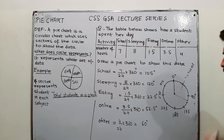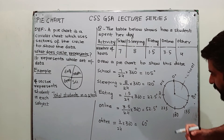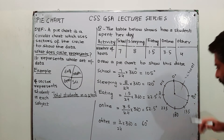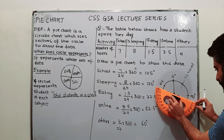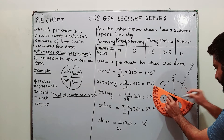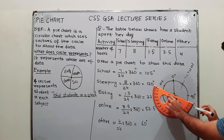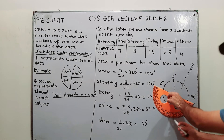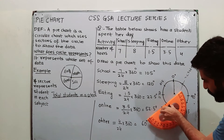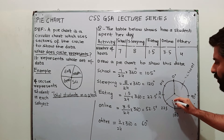The next sector is for sleeping, which has an angle of 120 degrees. Start from where you ended the school sector. Place your protractor on this line — this is 0 — and measure up to 120 degrees. Join this point to the center. This is the second sector, which represents sleeping.